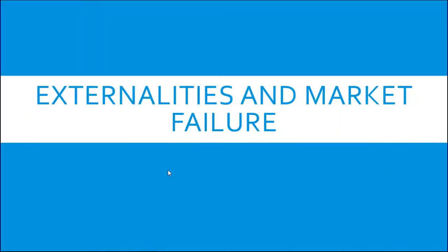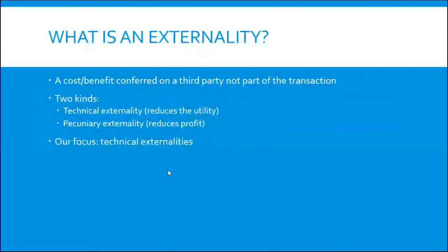What exactly is an externality? An externality is when there is a cost or benefit conferred on a third party that is not part of the transaction. When it is a cost that is put upon a third party, we call that a negative externality. When it's a benefit, we call it a positive externality.